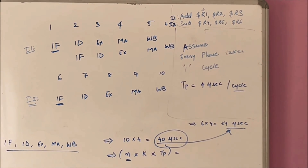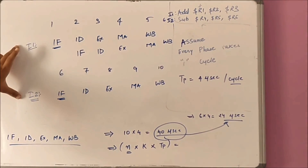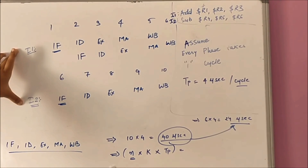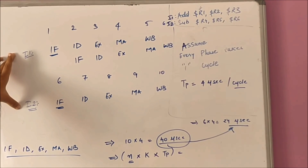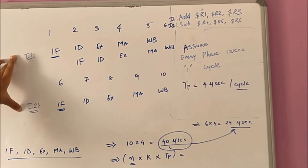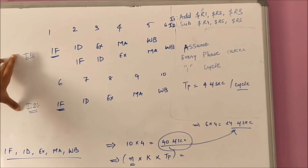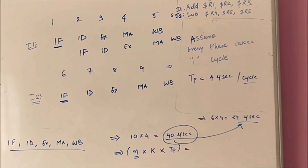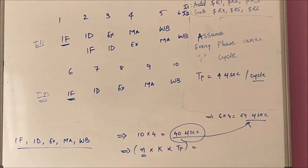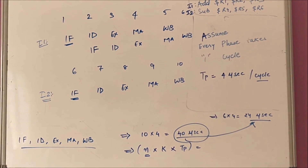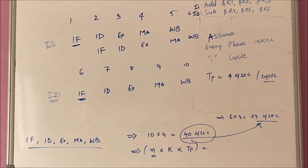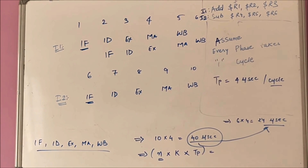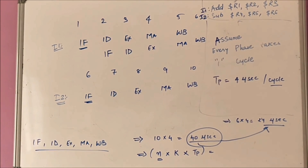This is the advantage of pipelining architecture. Before, what we did was non-pipelining, because there was no kind of parallel execution of instructions or phases. In the next tutorial I will be listing down all the limitations and advantages of pipeline execution and non-pipelining execution.